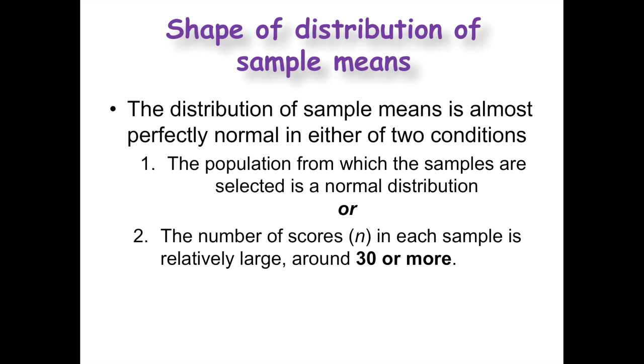You can assume your distribution of sample means is normal if it meets one of two conditions: one, the population from which the samples are selected is known to be a normal distribution; or two, the number of scores in each sample is relatively large, passing that 30 mark. You don't have to meet both. If the population distribution is unknown, as long as you pump up your sample size, you should be okay.